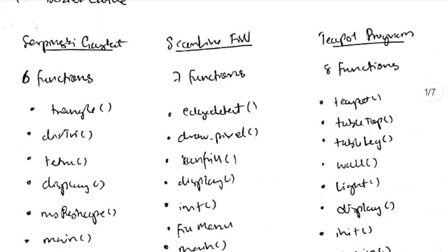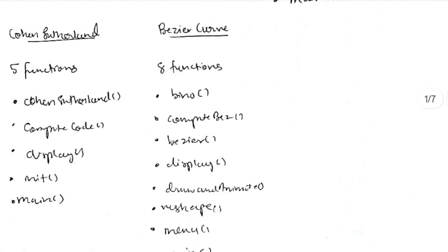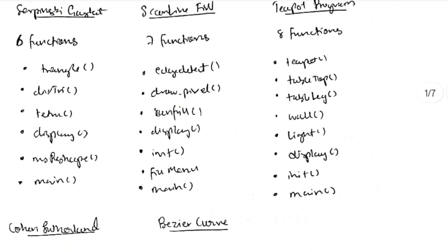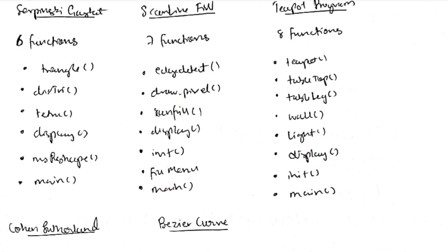Let's see what functions are in each program, including the main function. In the Sierpinski Gasket we have 6 functions, Scanline Fill has 7 functions, Teapot has 8 functions, Cohen-Sutherland has 5 functions, and Bezier Curve has 8 functions. This is the first thing you need to know — memorize the number of functions and which functions are being used.